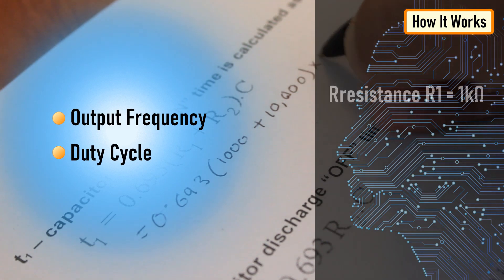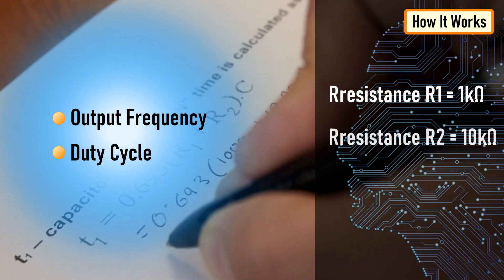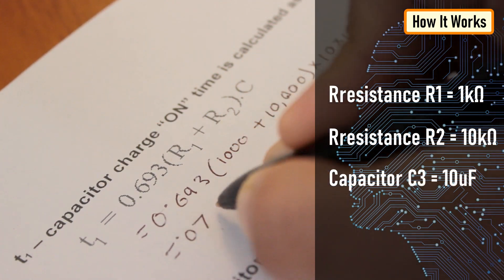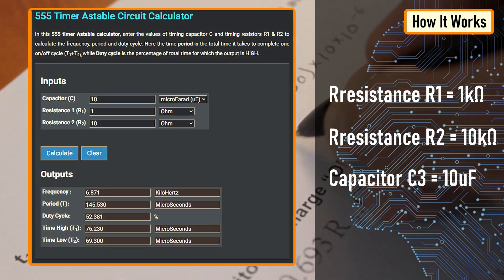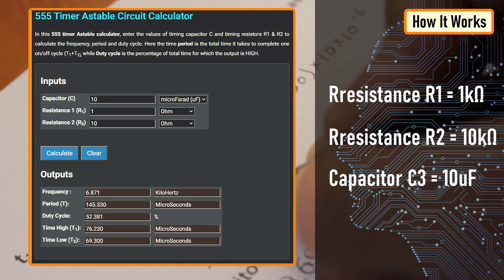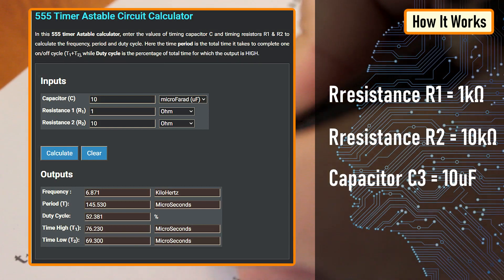In my setup, I have resistance R1 equal to 1 kilo ohm, R2 as 10 kilo ohm and capacitor C as 10 micro farad. There are many online calculators to calculate this online. I'll provide a link to one of the astable calculators in the description below.